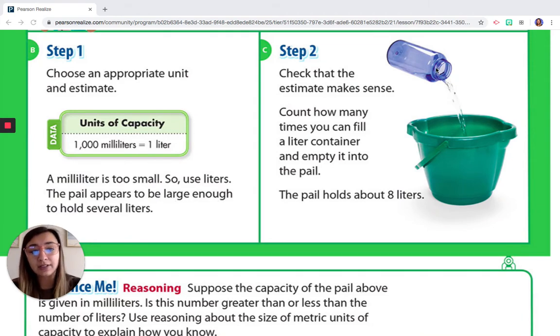So if you can see kind of the size difference from the water bottle and the pail, we know and we can estimate that we are going to have to use more than one water bottle full of water to fill it up.